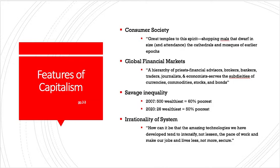The fourth feature of capitalism is the irrationality of the system itself. We like to think that capitalism is a system that helps us organize our lives, perhaps through the invisible hand of the market in the words of Adam Smith, but in fact the system is itself irrational. Schweikart asks: how can it be that the amazing technologies we have developed tend to intensify, not lessen, the pace of work, and make our jobs and lives less, not more, secure? Even though the market looks strong because of stocks and bonds, inequality makes people's lives precarious. We have technologies that could reduce the work week, but instead people are working more and more.